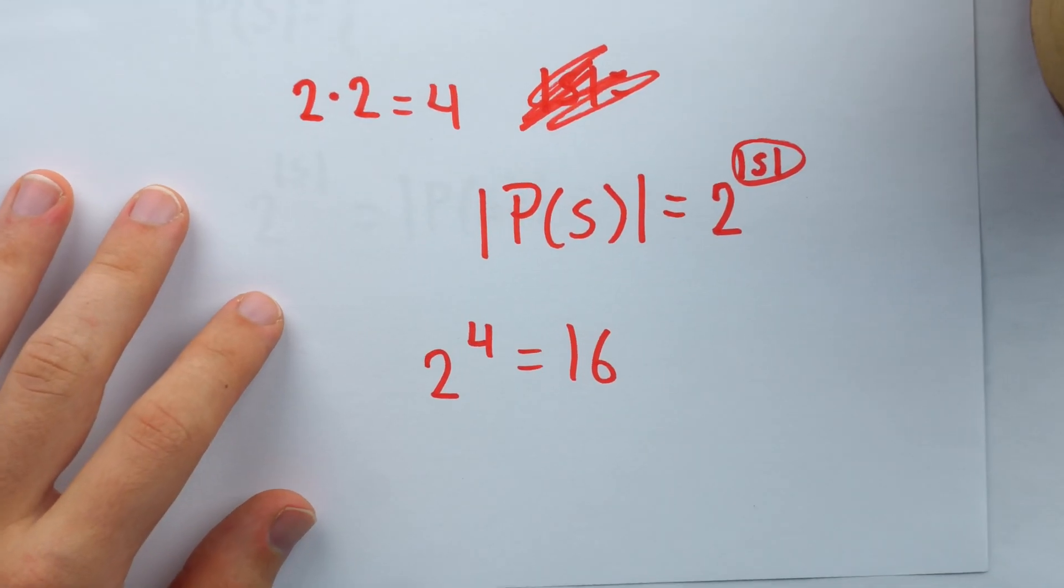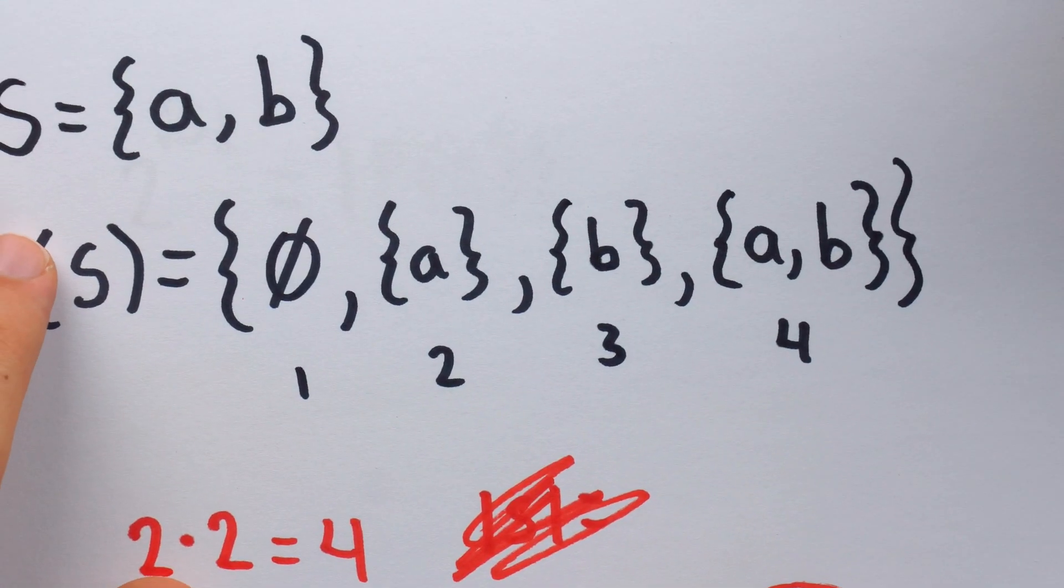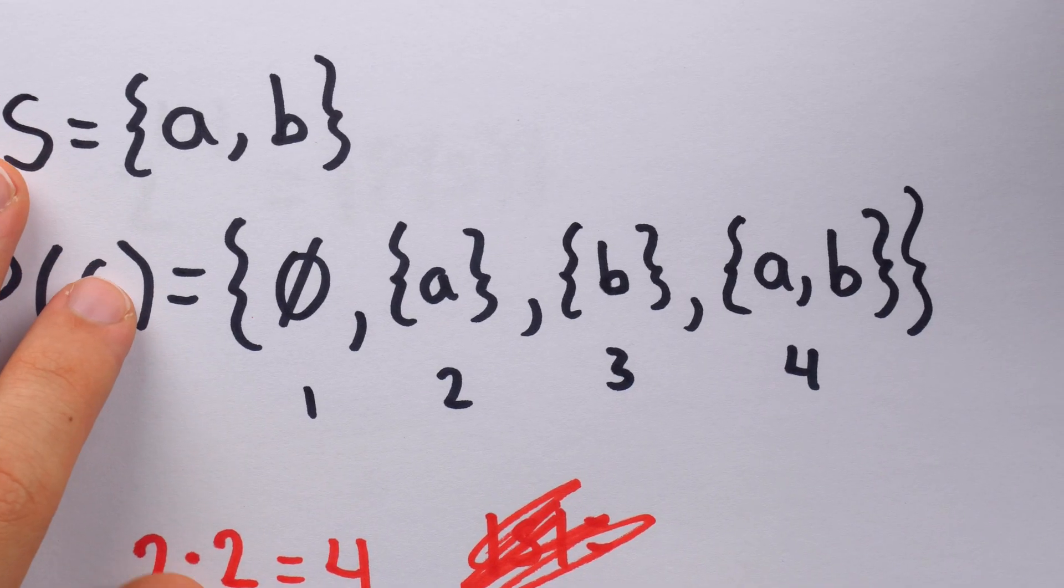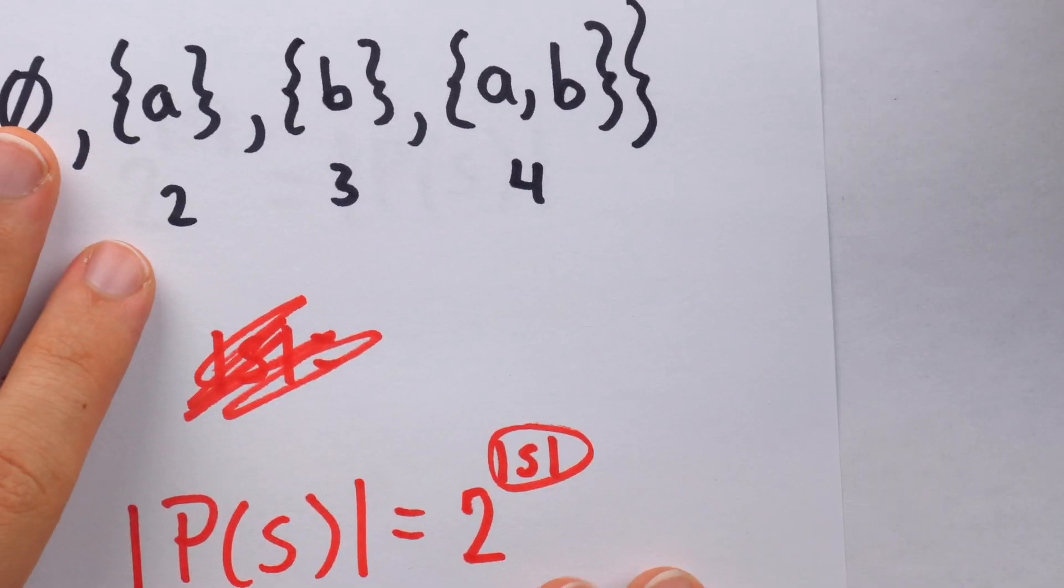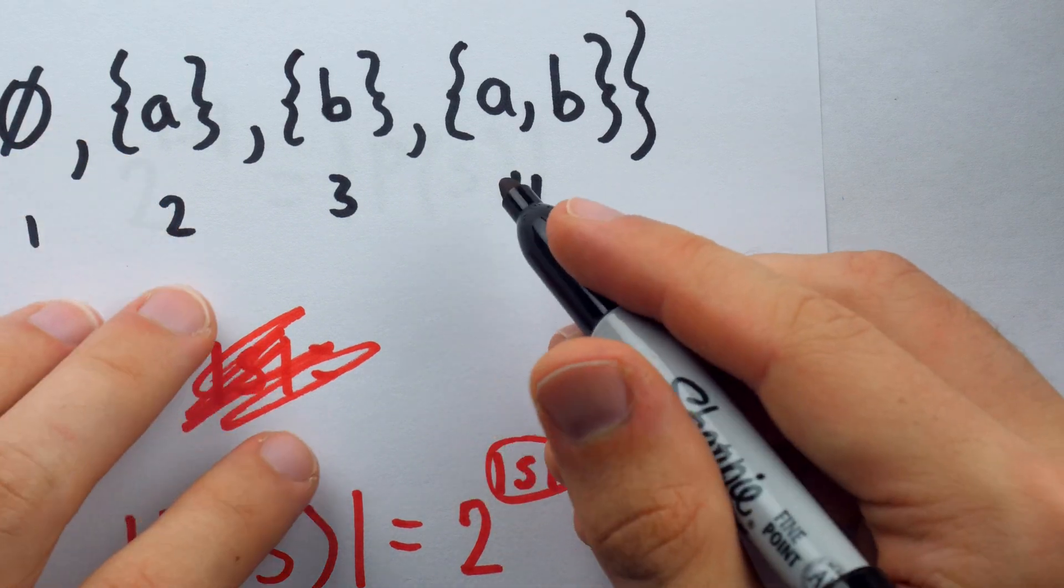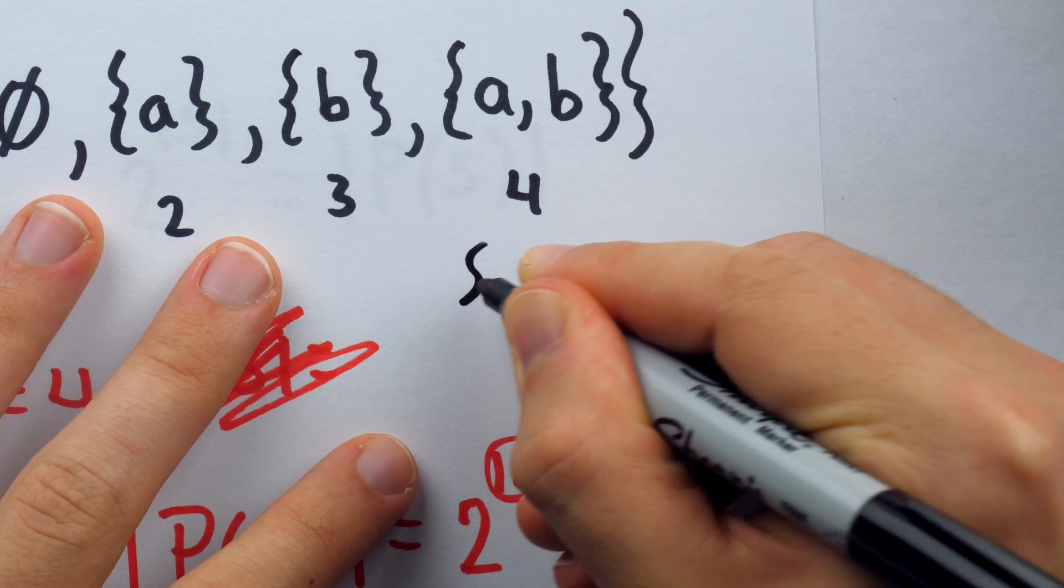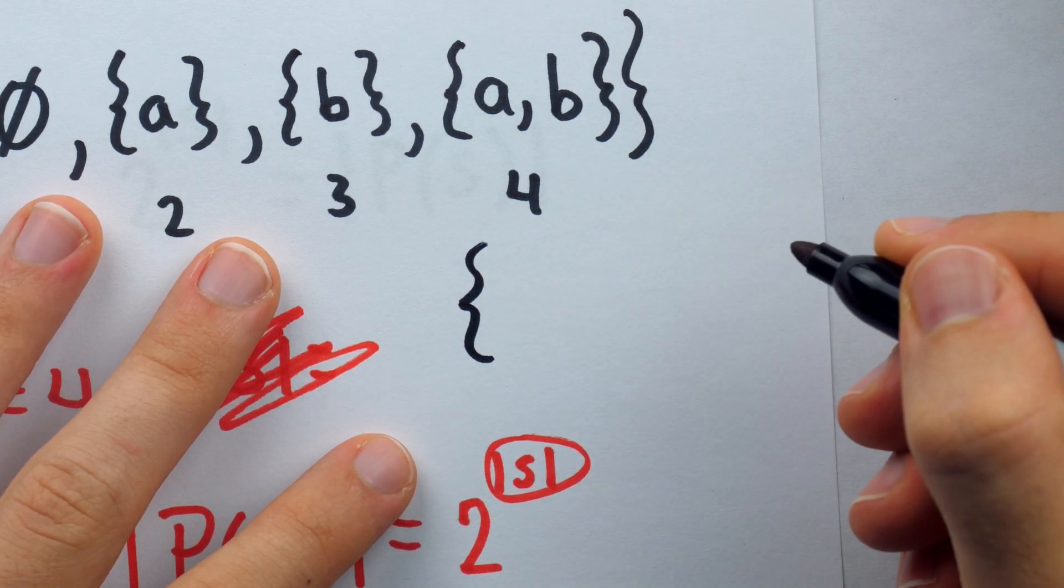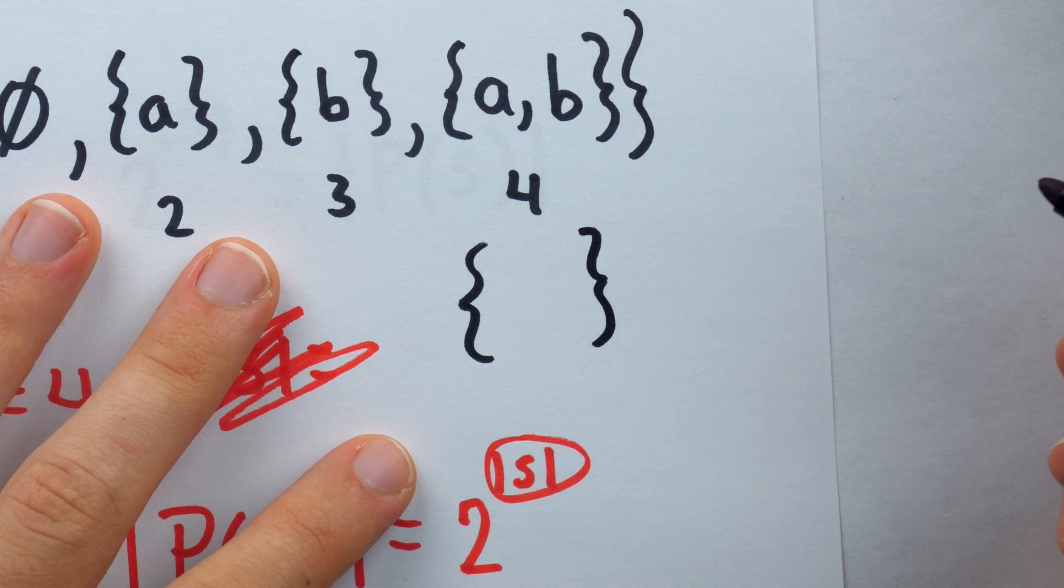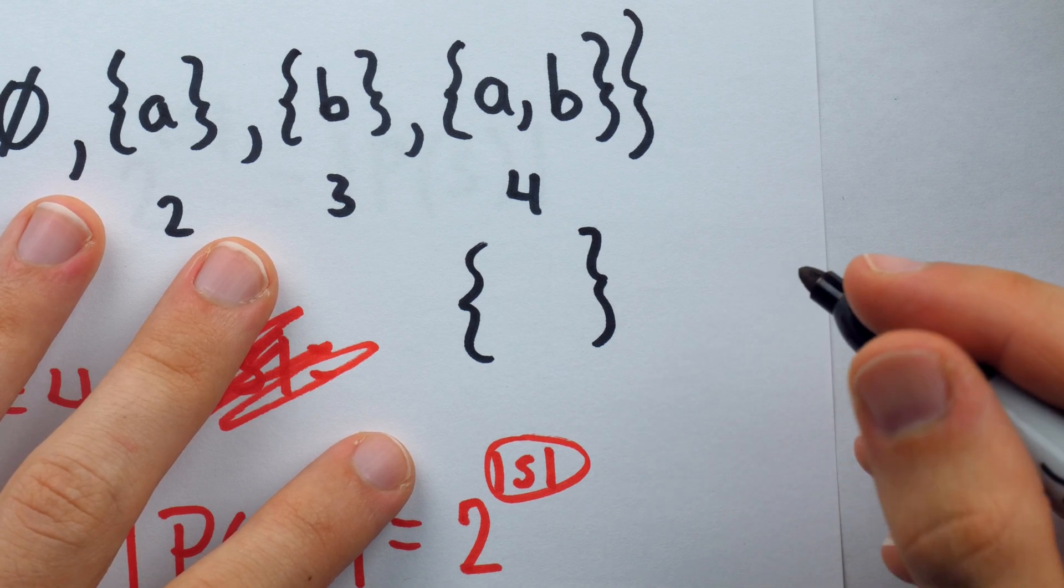Before we do that and get into this painstaking example, the one last thing I want to say is just a note on writing the set brackets. Because when you have to write so many set brackets, they might get really ugly if you're not trained in writing them. So the way you should think about writing them, if you want them to look decently good, is to write it in two pieces. The left bracket is an S and then a backwards S.